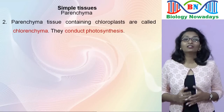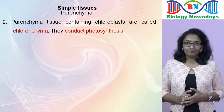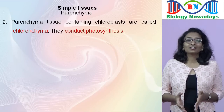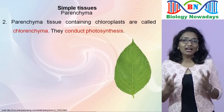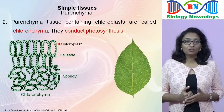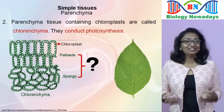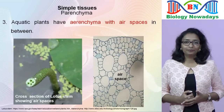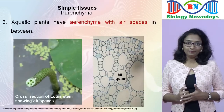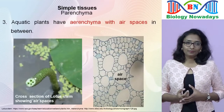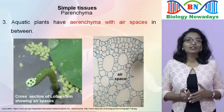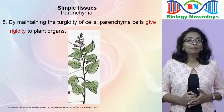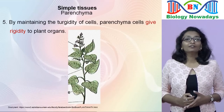Parenchyma tissue containing chloroplasts is called chlorenchyma, and it conducts photosynthesis. Chlorenchyma is seen in the photosynthetic organs, or leaves, and consists of palisade and spongy parenchyma. Aquatic plants have a special kind of parenchyma tissue called aerenchyma, which has air spaces in between that help in the internal circulation of air and also give buoyancy to the plant. Specialized secretory parenchyma cells are found lining the resin ducts and other secretory structures. Finally, by maintaining the turgidity of cells, parenchyma cells give rigidity to plant organs.